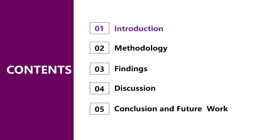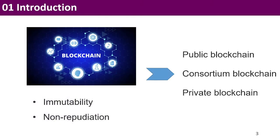I'm going to introduce our work in the following five parts. The first is an introduction. As a decentralized and shared ledger, blockchain ensures the benefits of immutability and non-replication of transaction records among different parties. Generally, blockchain technology can be classified into three types: the public blockchain, consulting blockchain, and private blockchain.